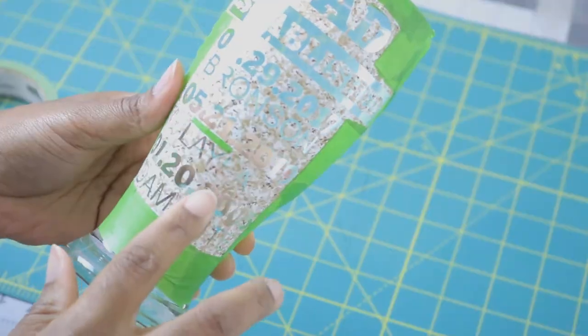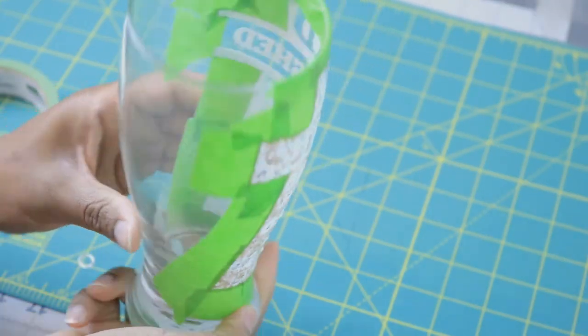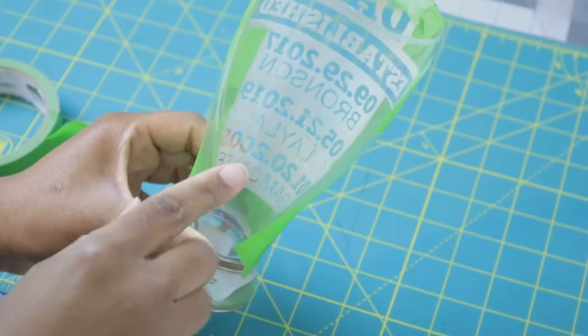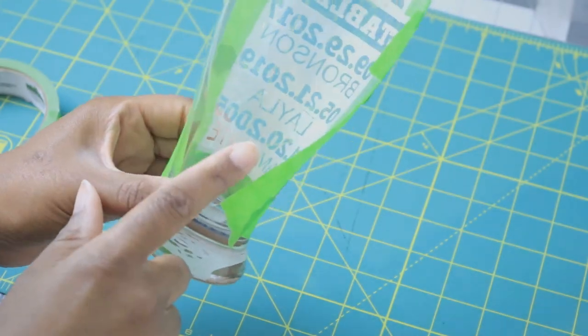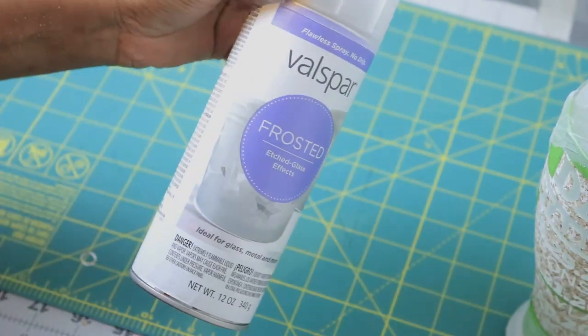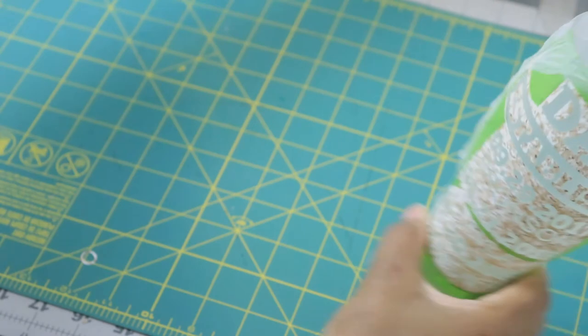Now I'm going to take some painters tape to align all around the contact paper. If you look at the back, you can see any open areas that you need to cover up with painters tape.